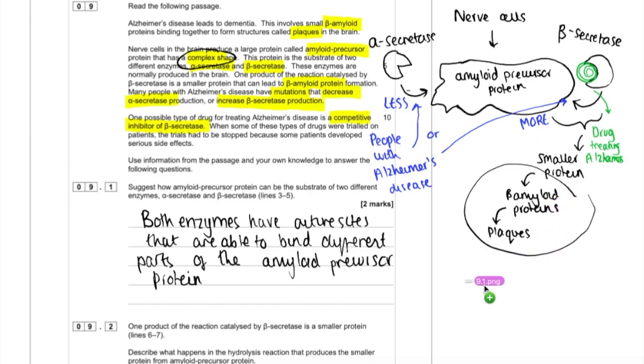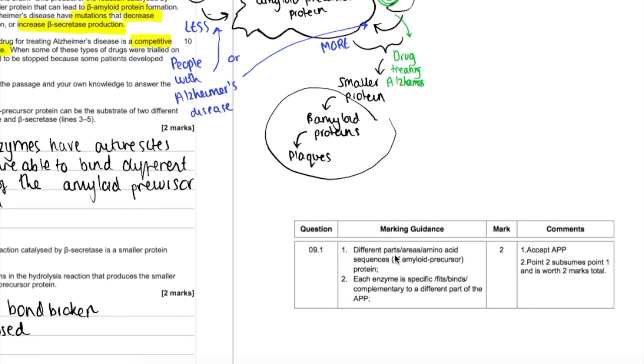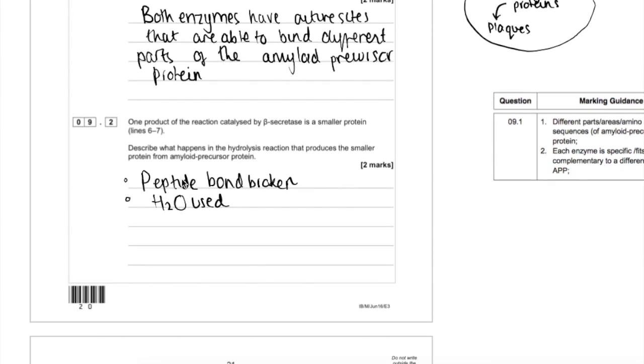If we have a look at the mark scheme here, you could have just said the first part for one mark: different parts of the protein or different amino acid sequences. But the second point, you can actually get two marks for on its own. The fact that each enzyme is specific or fits or binds to, or is complementary to, a different part of the amyloid precursor protein. That's two marks there.